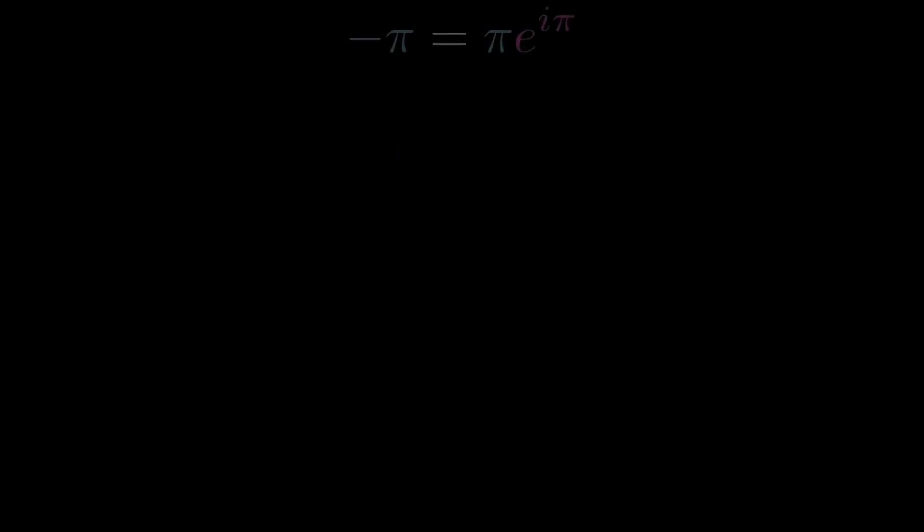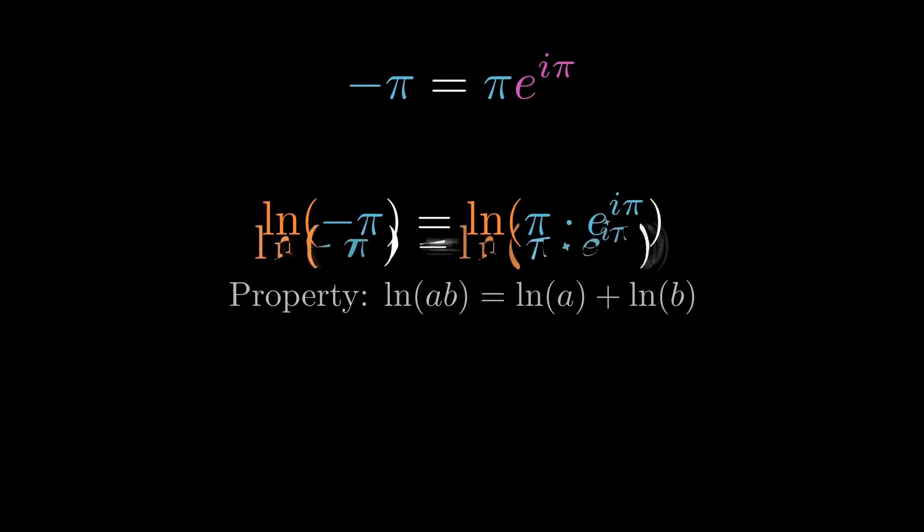With Euler's identity, we can finally solve the equation. We substitute negative pi with its polar form. Now, we take the natural logarithm of both sides. This allows us to access the exponent. Using the laws of logarithms, multiplication turns into addition. We split the term into two parts.